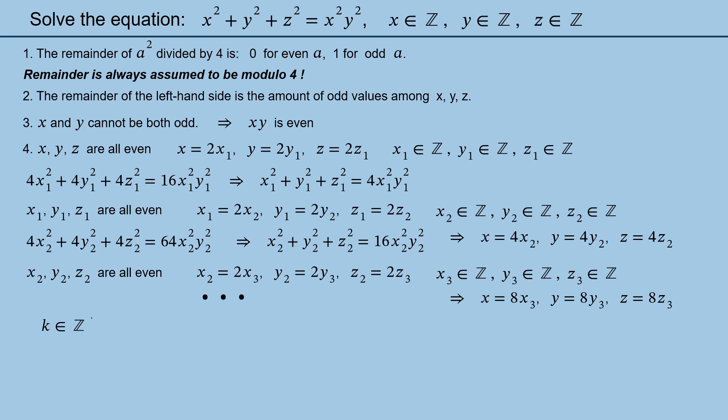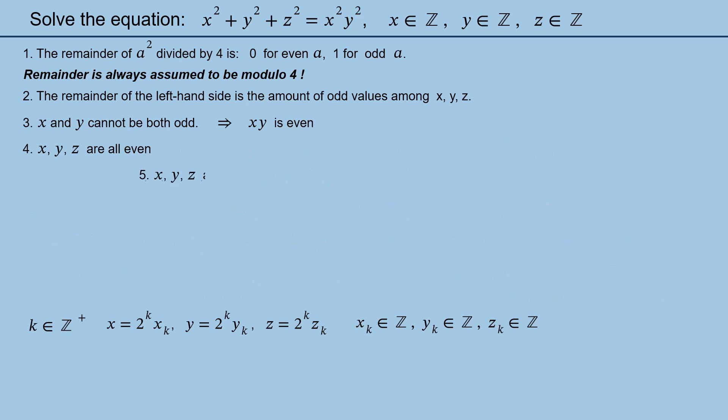For iteration number k where k is a positive integer, we can write x = 2^k × x_k, y = 2^k × y_k, z = 2^k × z_k, where x_k, y_k, z_k are all integers. In other words, x, y, and z are all divisible by 2^k for any positive integer k.